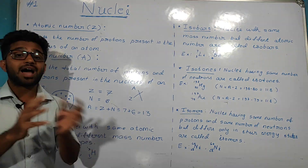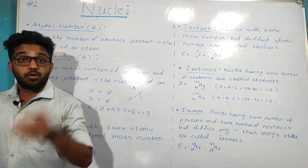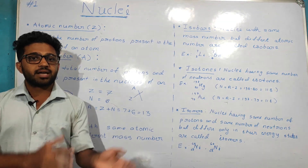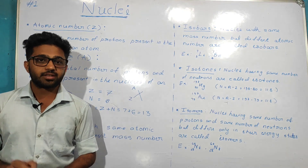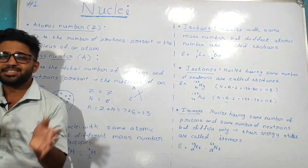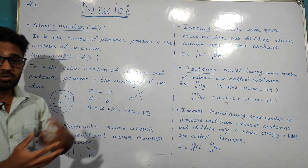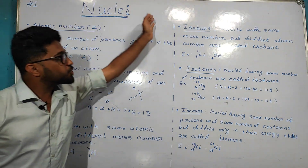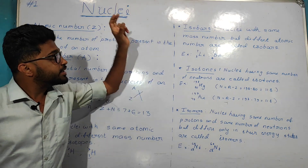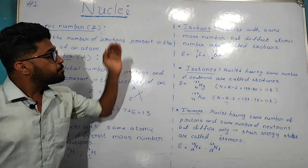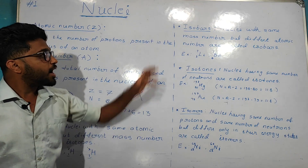If you wish, leave a comment in the comment box below to motivate us. Now let's talk about isobars. Nuclei with the same mass number but different atomic number are called isobars.